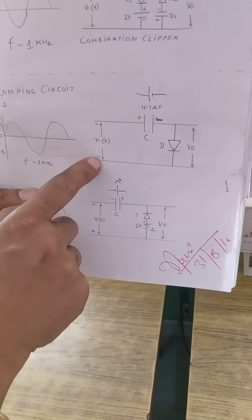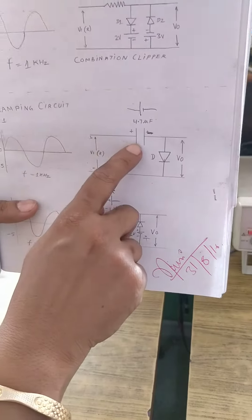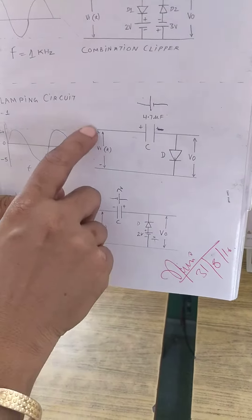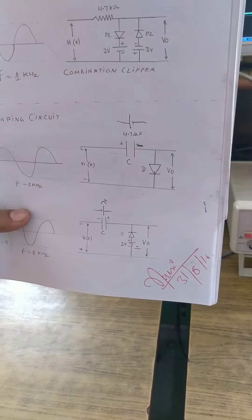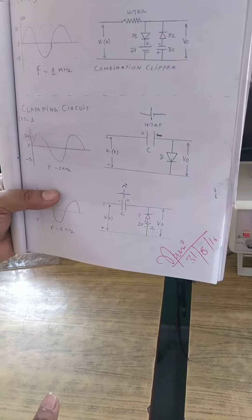We start with the polarity of input where the capacitor charges. Once the capacitor charges, then in the negative half cycle, the capacitor will discharge through the load resistance. And that is how we get the clamping of the circuit.